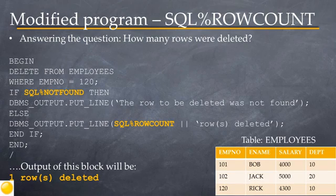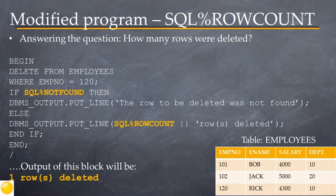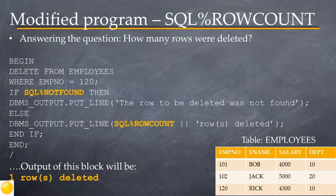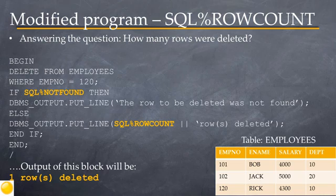Here we can see the use of the SQL%ROWCOUNT attribute, which answers the question: how many rows were affected by the DML? To know how many rows were deleted, use SQL%ROWCOUNT as shown in the program. Following the DELETE statement, the IF statement checks SQL%NOTFOUND; if the row was not found, it displays 'The row to be deleted was not found.' If employee 120 was found, SQL%NOTFOUND becomes false, and the ELSE part displays a number followed by 'rows deleted,' indicating how many rows were affected. Based on the table data, 120 does exist, so the output would be '1 row deleted.'